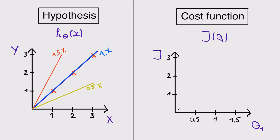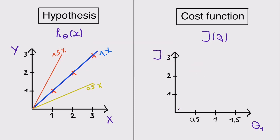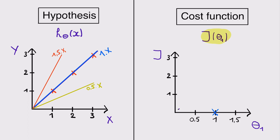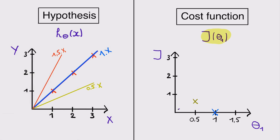We can now look at what it means to minimize a cost function. Let's plot these values of J as a function of theta 1. For theta 1 equal to 1 (blue line) the cost is 0; for theta 1 equal to 0.5 (yellow line) the cost is 0.58; and for theta 1 equal to 1.5 (red line) the cost is also 0.58.